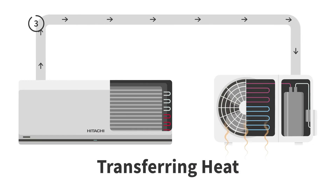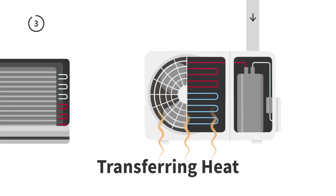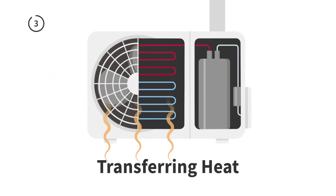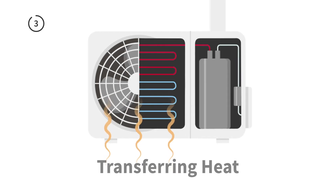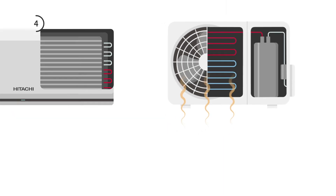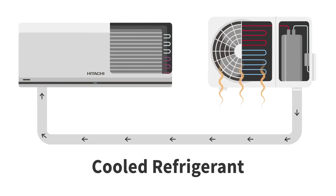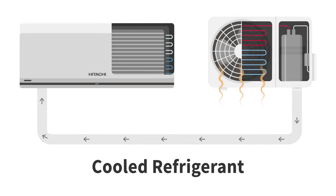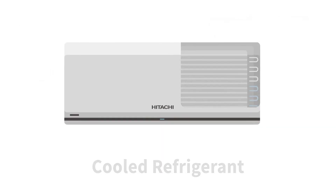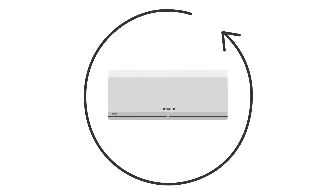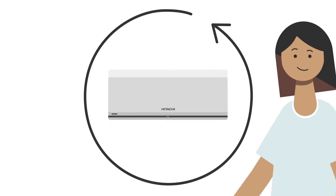Step 3: once compressed, the superheated gas enters the condenser, transferring the heat to the outside air, cooling the refrigerant and returning it to a liquid state. Step 4: the cooled refrigerant flows back to the indoor unit, where it passes through the expansion valve to remove pressure before it enters the evaporator coil, ready to start the cycle again.